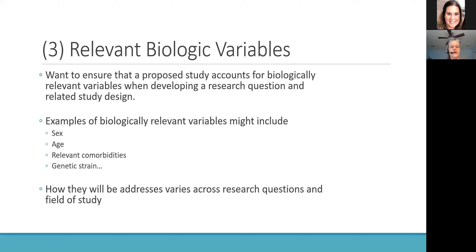Moving to point number three: the NIH's point about needing to address rigor in terms of relevant biologic variables is important in terms of the experimental design as well. The NIH describes any relevant biologic variable as a variable expected to impact the disease or condition under study. Those certainly include sex, but also things like age, comorbidities, and genetic strain — varying depending on the disease and condition being studied. For example, body mass index is known to be associated with risk of diabetes, so if we want to examine genetic factors that impact diabetes, we probably want to account for BMI.